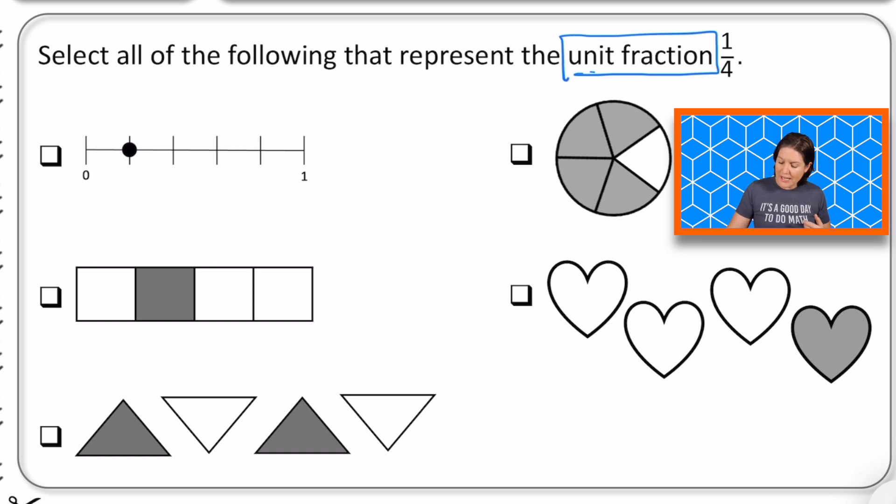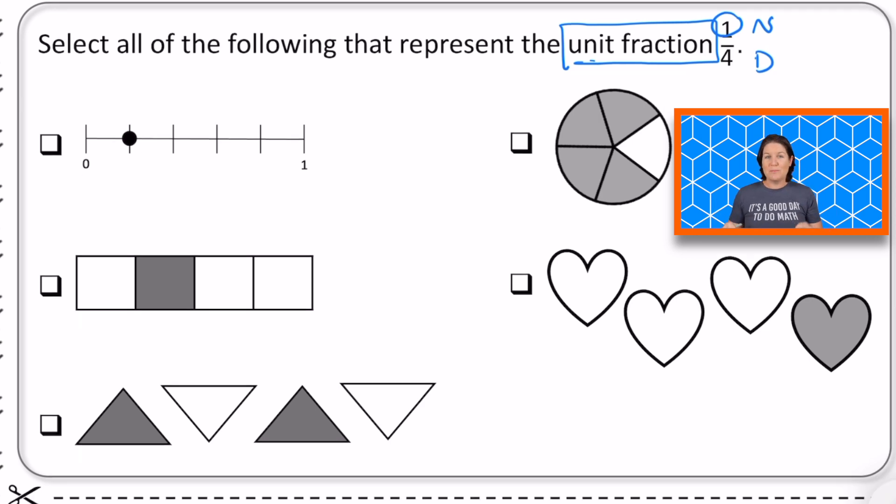A unit fraction has that one in the numerator. And the four is the denominator. You see that number on top? That's called the numerator. It describes the amount that is being considered. And when you jump down from the fraction bar, denominator, it's the total number of equal parts in each whole. That means that we should be considering one out of four.